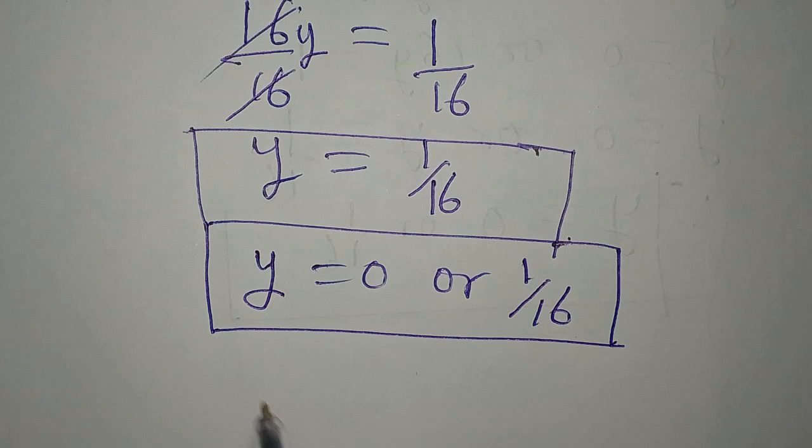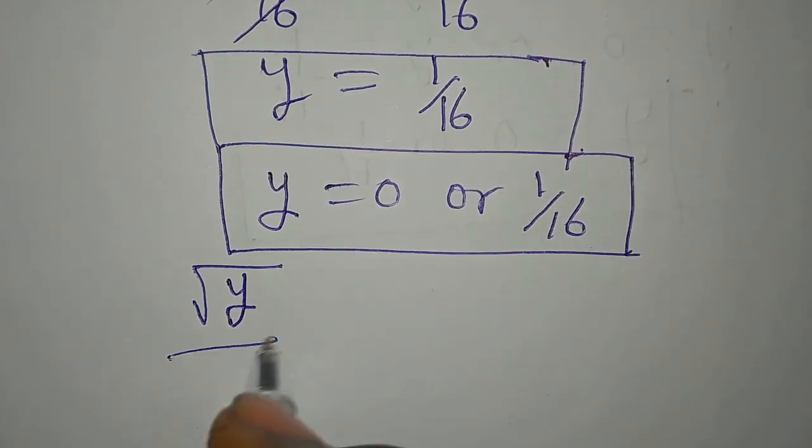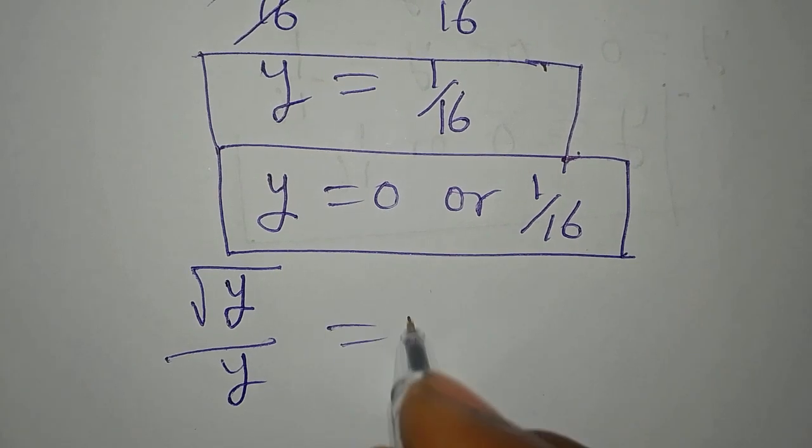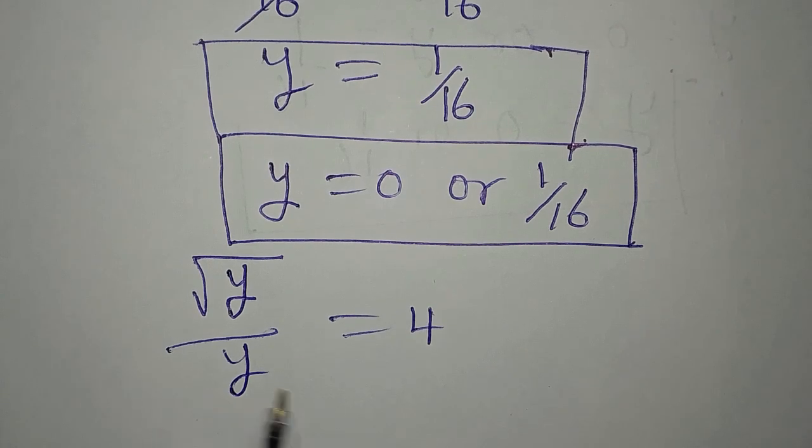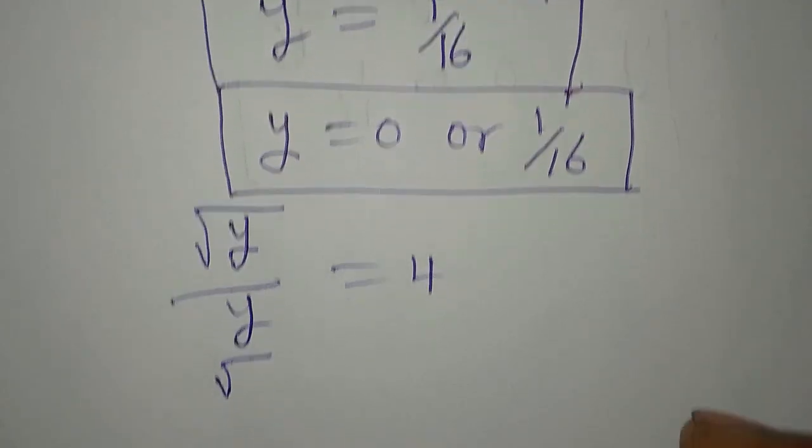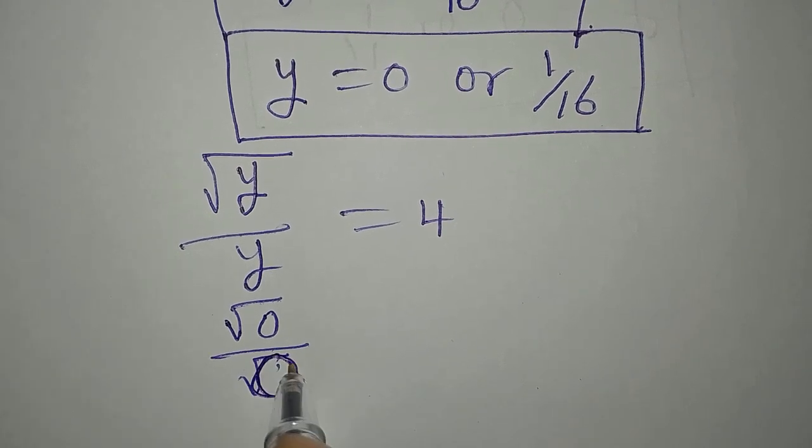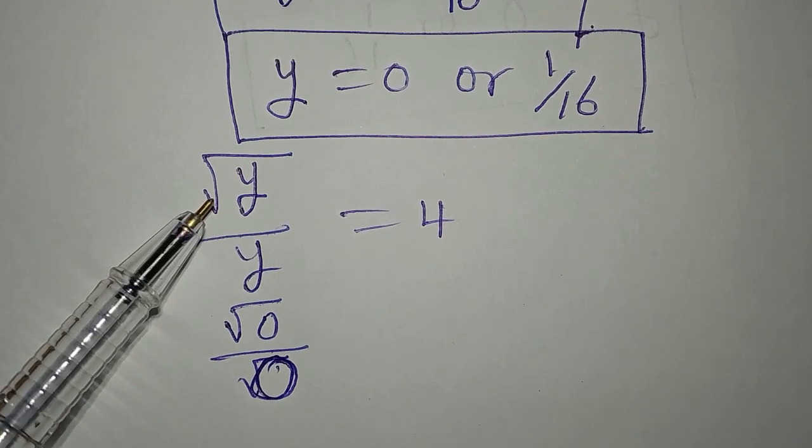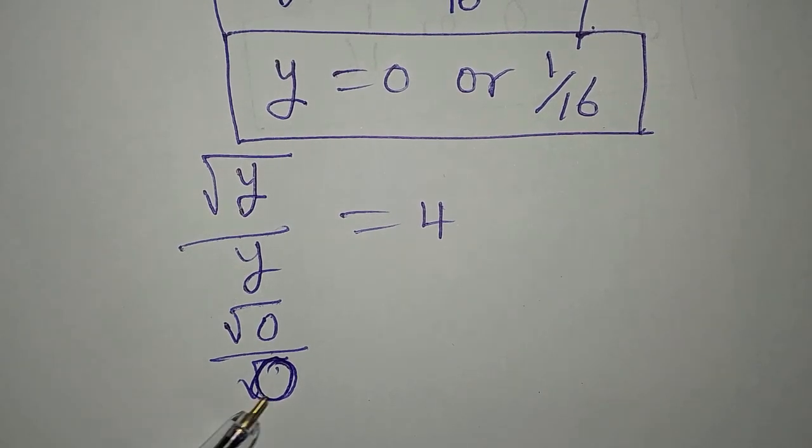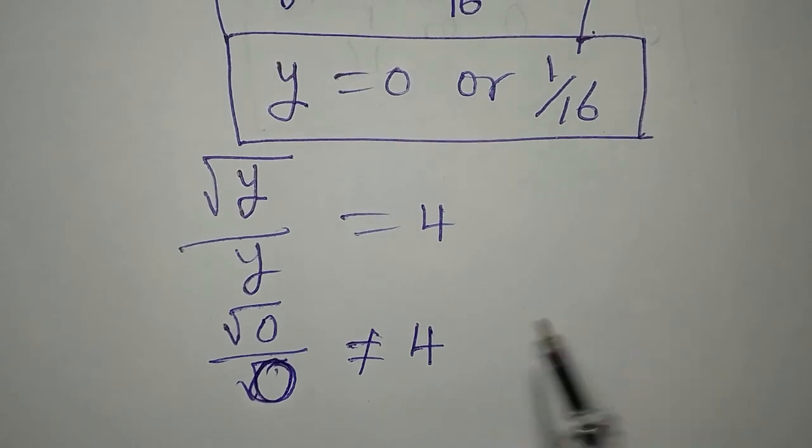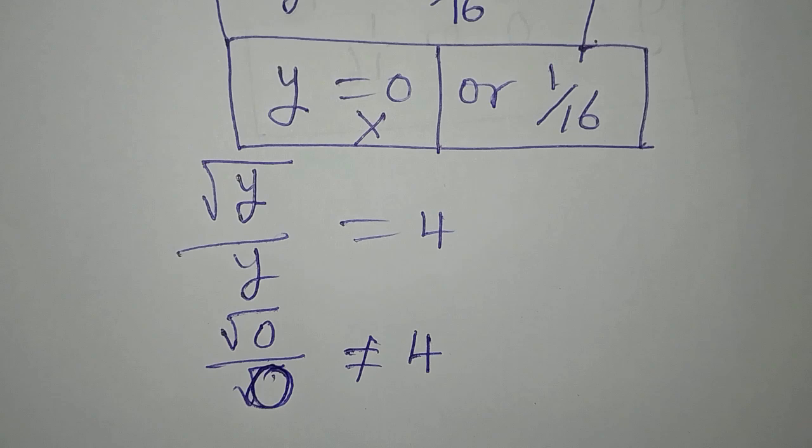Now let's confirm. From the confirmation we should be able to know which one is more suitable. Square root of y over y equals 4. Now from the second method, we had 0. If we put 0 here we'll be having square root of 0 over 0, because the numerator is square root of y so it becomes square root of 0, and the denominator is 0. And this is never giving us 4, so this means that this value of y has to be rejected.